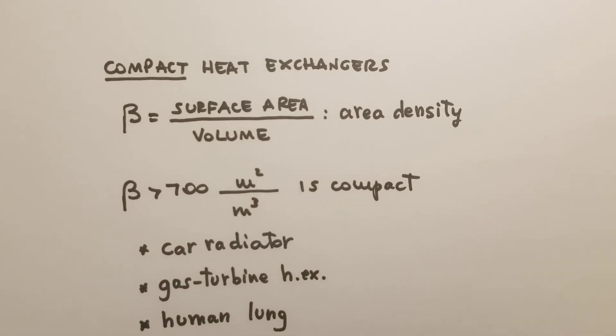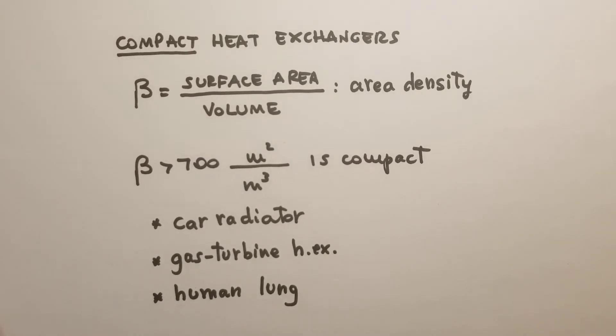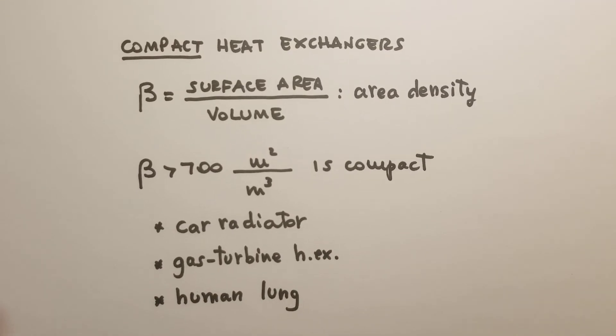An important quantity in engineering design of heat exchangers is the area density beta. This is important to quantify whether a heat exchanger is compact. The area density beta is defined as the ratio between the surface area through which the two fluids exchange heat and the volume of the heat exchanger. If beta is larger than 700 meters squared divided by meters cubed, then the heat exchanger can be defined as compact.